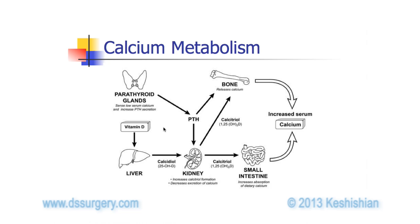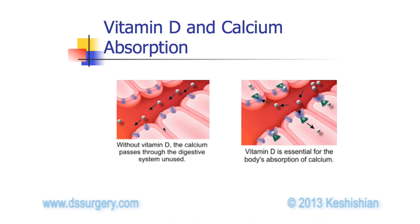A second molecule we need to be aware of is vitamin D. Vitamin D is the key that allows calcium to be absorbed. As shown in these drawings, calcium may be available in the GI tract and there are calcium receptors; however, calcium is absorbed when the receptor is opened up by vitamin D. You can think of vitamin D as the key that opens the door for calcium to be absorbed.